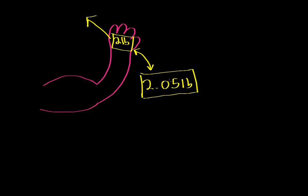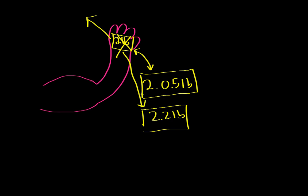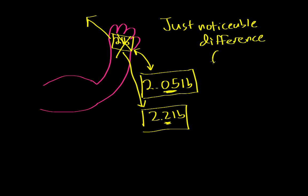Instead, let's say I gave you a 2.2-pound weight. You close your eyes, I swap out the two-pound weight, and then you lift the new one. Most people would probably notice this new increase. So an addition of 0.05 pounds wouldn't get noticed, whereas an addition of 0.2 pounds would. The threshold at which you can notice a change in sensation — going from not noticing to actually noticing — is known as the just noticeable difference, or JND.